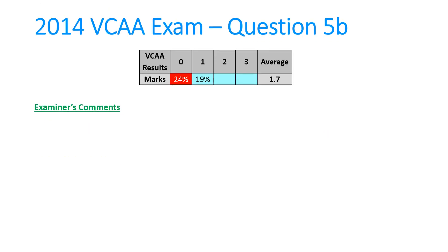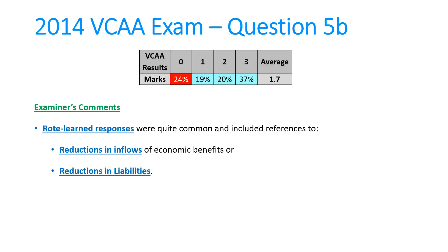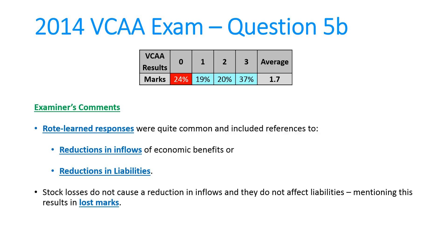The state average was 1.7 out of three — pretty well answered, with over a third of students getting three out of three. What's important in the examiner's comments is the point about rote learning definitions. You can't write both 'an outflow of economic benefits' and 'a reduction in inflows' — you only give the part that's appropriate. Likewise, don't say it's a decrease in assets or increase in liabilities if liabilities have nothing to do with the question. The examiner noted that if you mention a part of a definition that's not appropriate, you will actually lose marks.